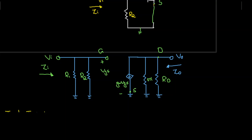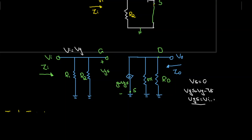We can see that vi equals vg. Since vs is grounded, vs equals zero. Therefore, vgs equals vg minus vs, which gives vgs equals vi minus zero, so vgs equals vi. This is our first key equation.